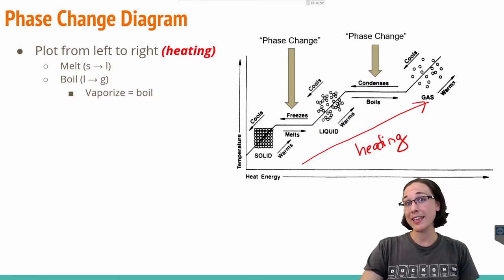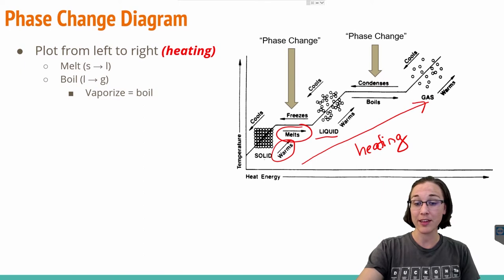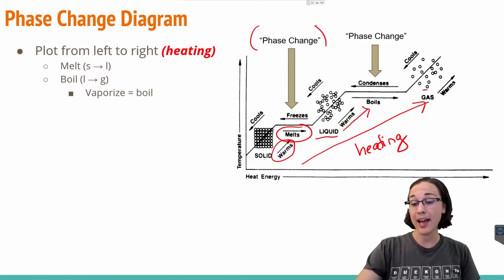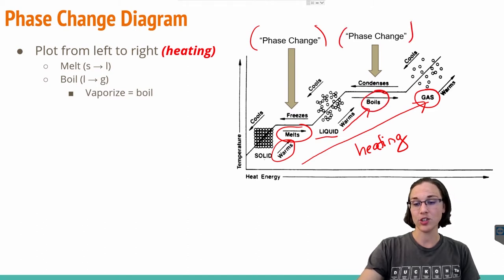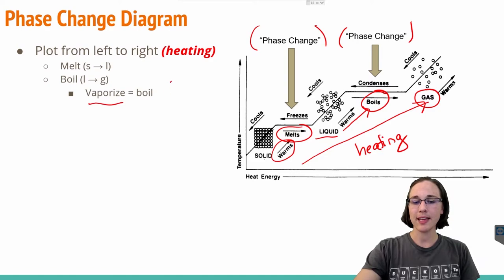We've added the more technical terms for the phase changes. When we warm a solid up to get it into its liquid phase, that's called melting. When we warm up the liquid to get it to turn into a gas, that's called boiling — or vaporization, same as the delta H vap from previous lessons.